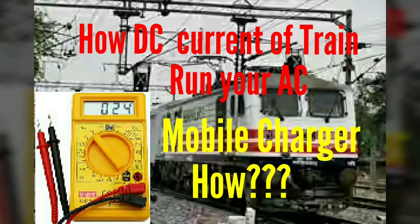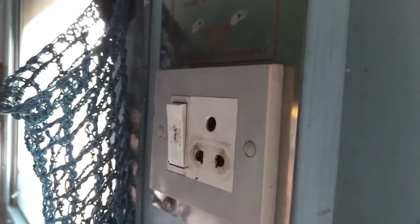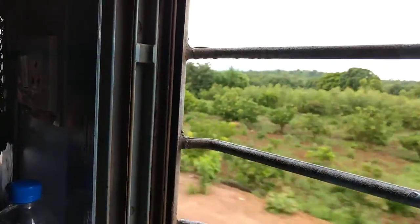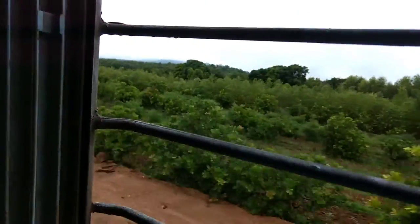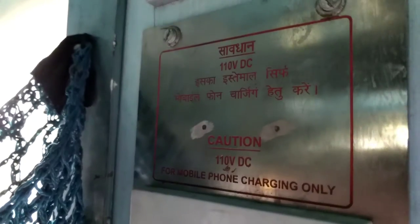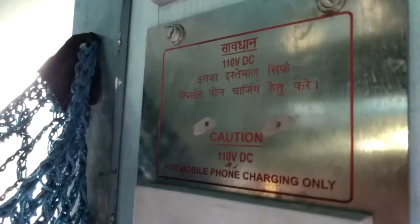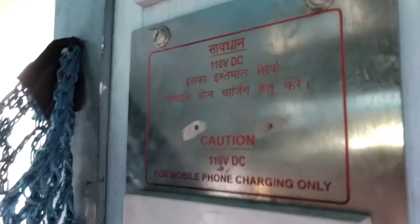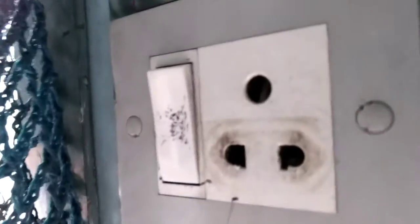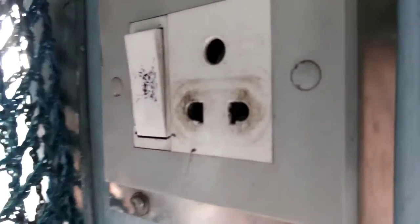How the DC current of train runs your AC mobile charger. Here is a port provided inside the train we all know. It's clearly mentioned that it is 110 volt DC with a warning sign. It can only be used for mobile charger.